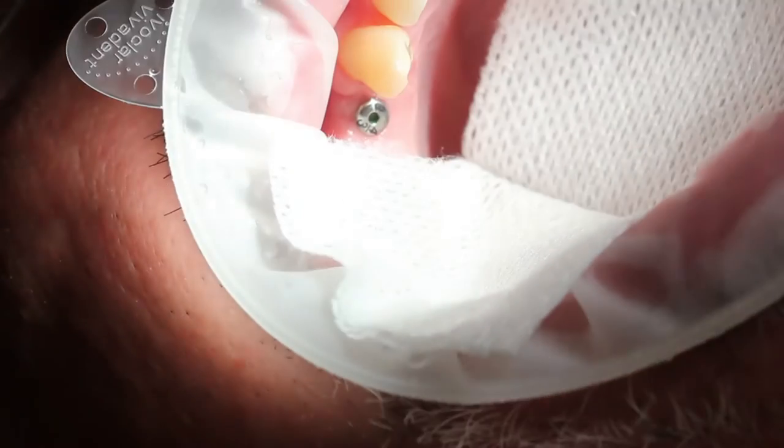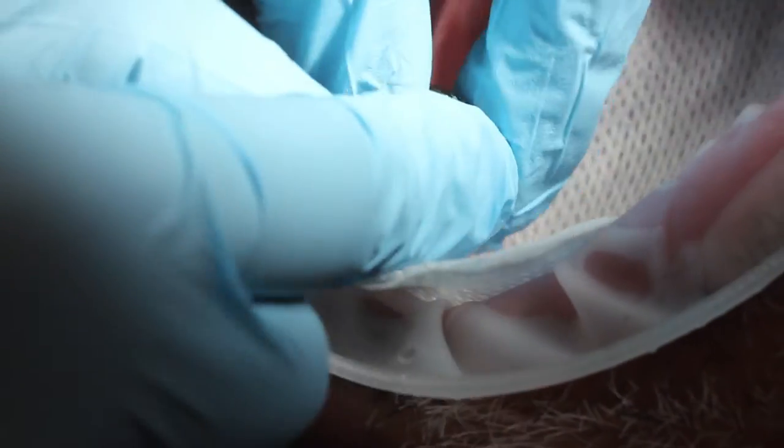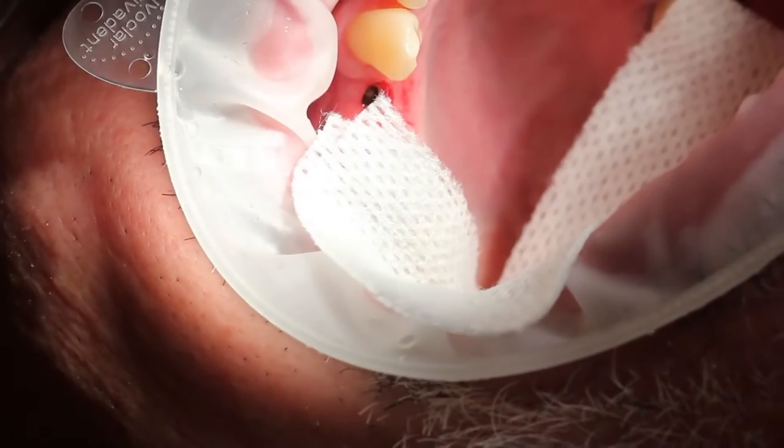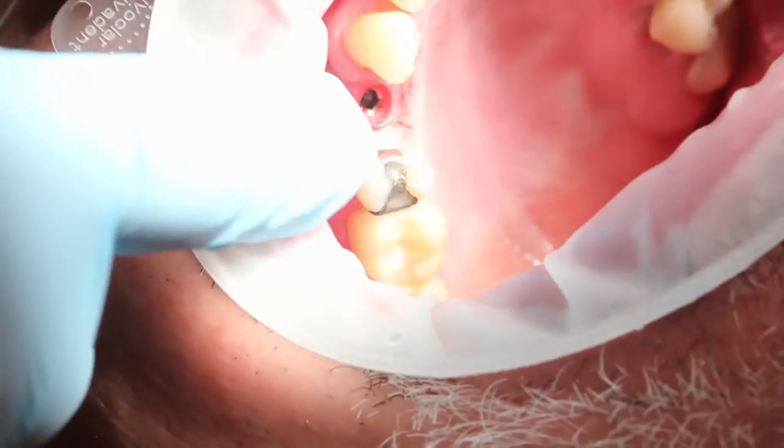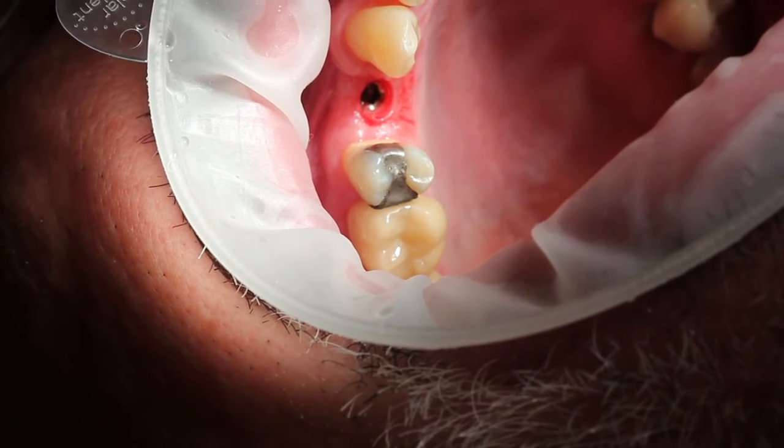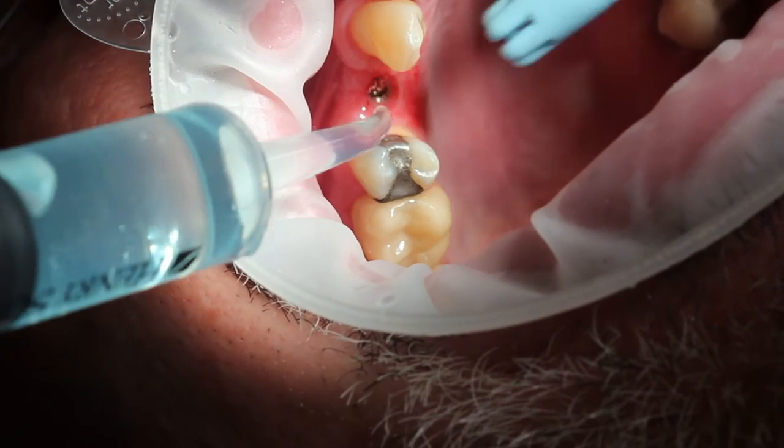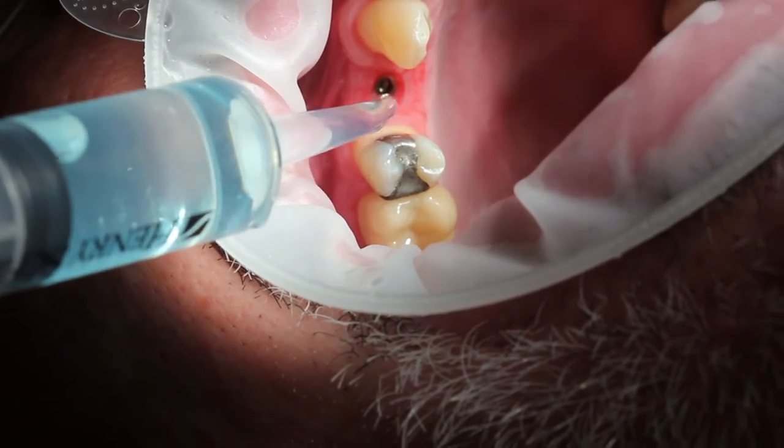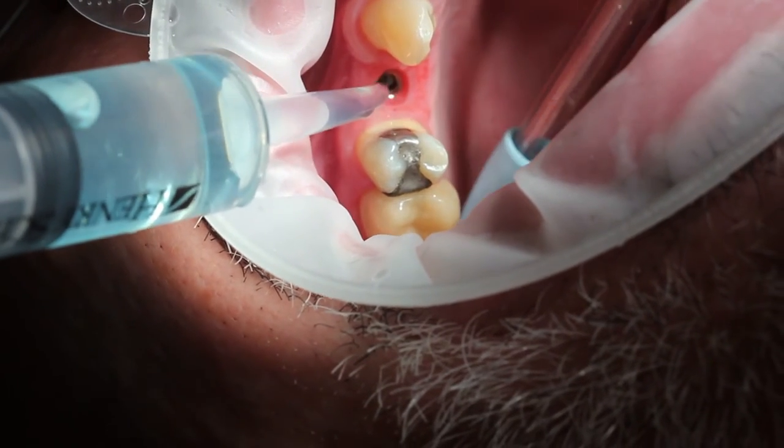The first clinical step will be to remove the healing abutment from the implant. Place a throat pack to catch anything that may fall in the back of the throat. You're going to use your driver to unscrew the healing abutment. Once it's removed, you can use chlorhexidine to irrigate the implant to clean anything that may be trapped inside the threaded portion.